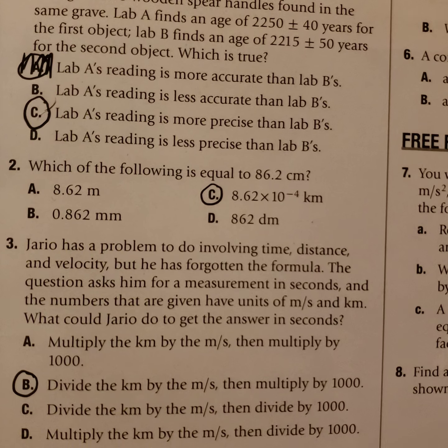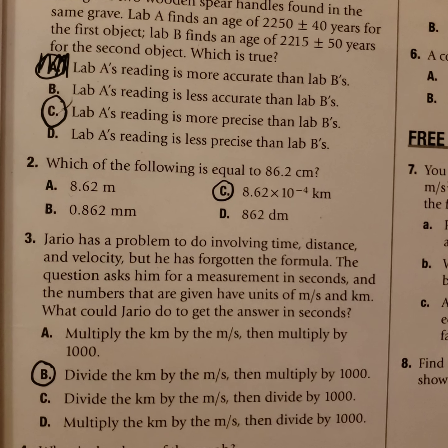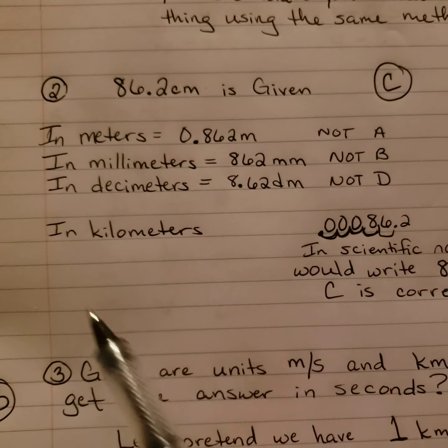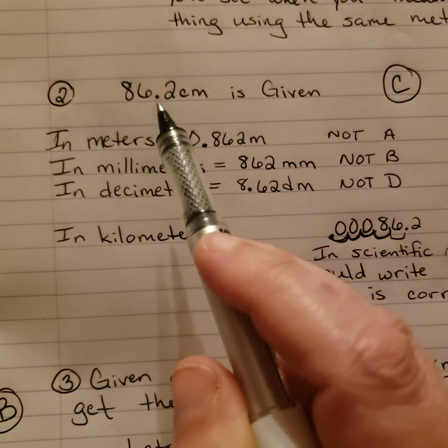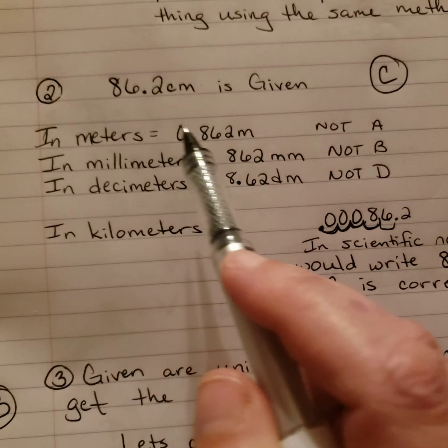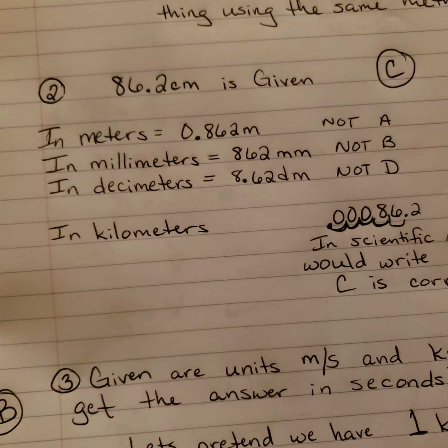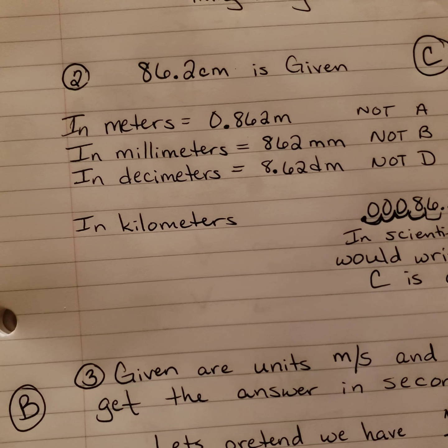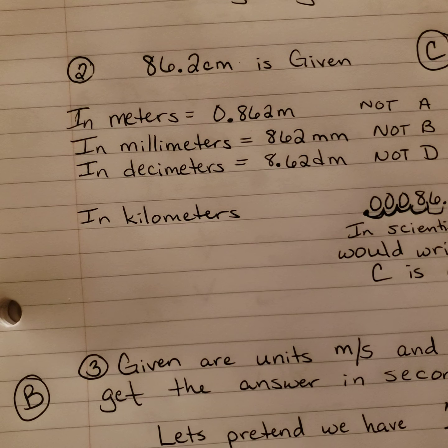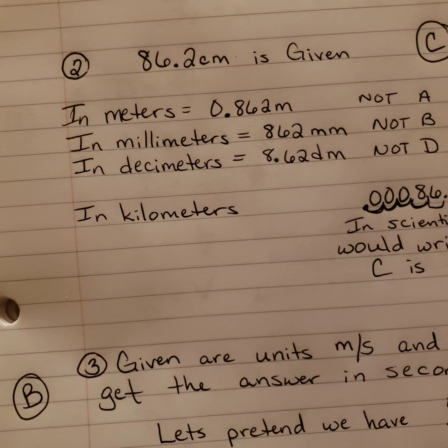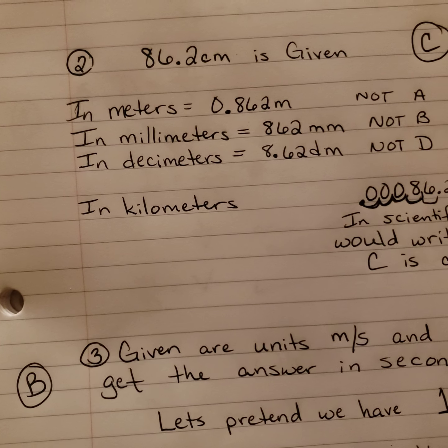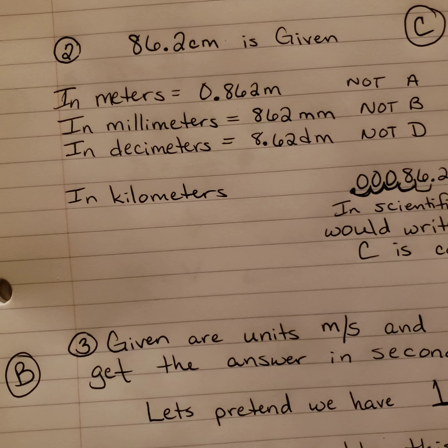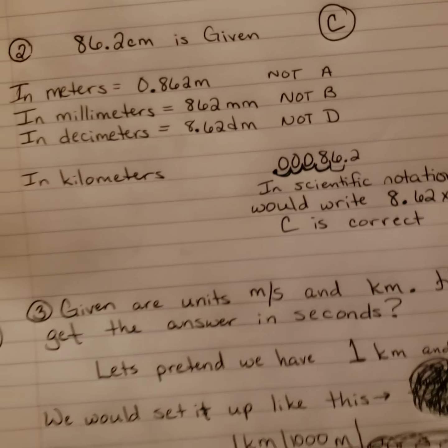Let's take a look at number two. Which of the following is equal to 86.2 centimeters? Let me take you through each of these. If we do it in meters, we move the decimal point two places, which gives us 0.862 meters. So it's definitely not A. If we do it in millimeters, we move the decimal one place to the right, which gives us 862 millimeters. So it's definitely not B. In decimeters, we move it one to the left, which gives us 8.62 decimeters. That's not right.